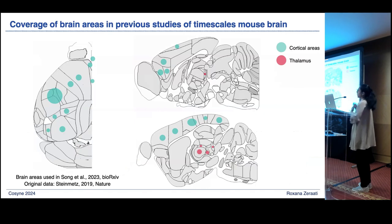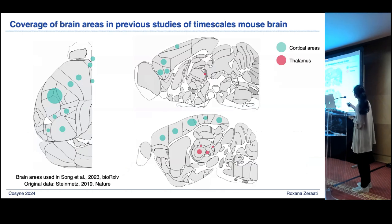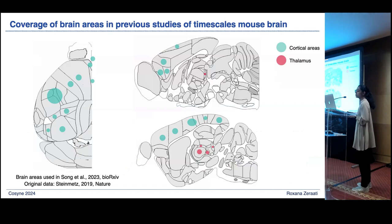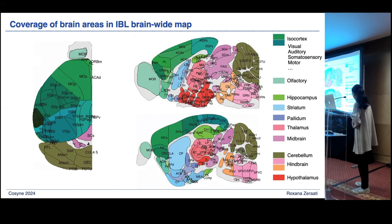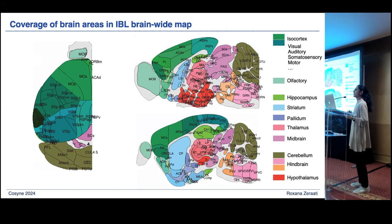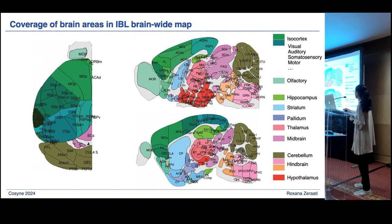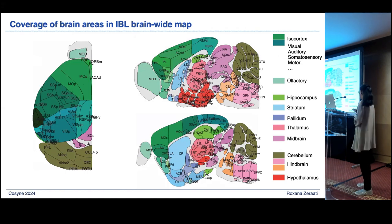To give a picture of what we are adding to what's already known about neuron timescales in the mouse brain: the blue dots are cortical areas studied in previous mouse brain timescale work, the red areas are thalamic areas included in previous studies, and now we are adding all the new brain areas. We have recordings across visual areas, somatosensory areas, motor areas, and many subcortical areas including striatum, thalamus, midbrain, pons, medulla, and cerebellum.